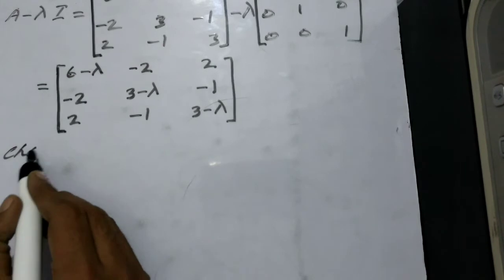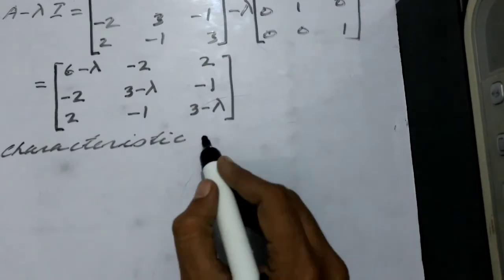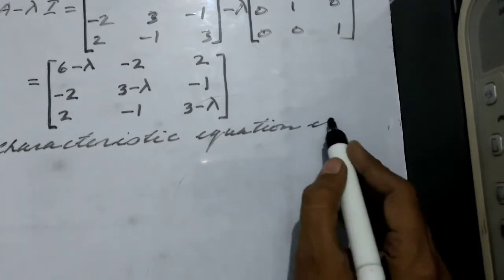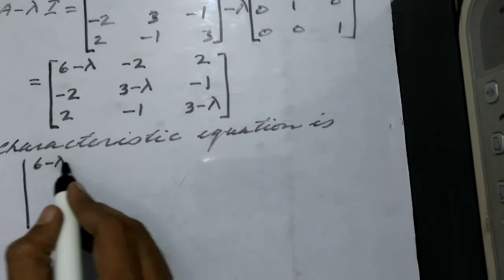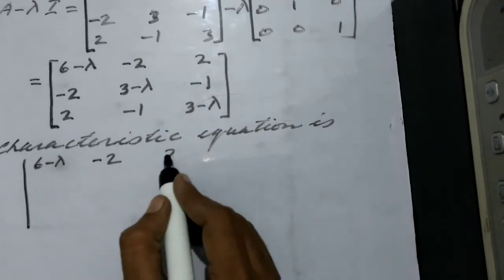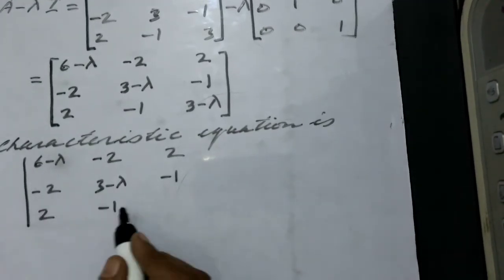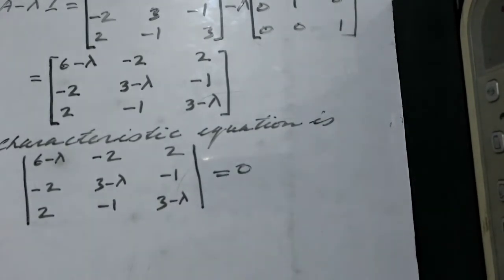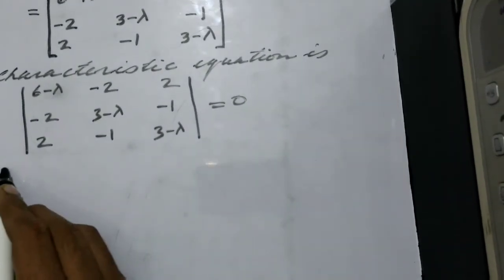Now we find the characteristic equation by equating the determinant of the characteristic matrix to zero: determinant of the matrix with (6 minus lambda), minus 2, 2; minus 2, (3 minus lambda), minus 1; 2, minus 1, (3 minus lambda) equals zero. This is the characteristic equation, and its roots are the eigenvalues.